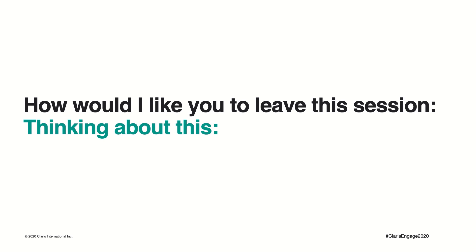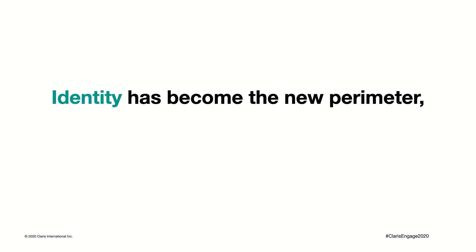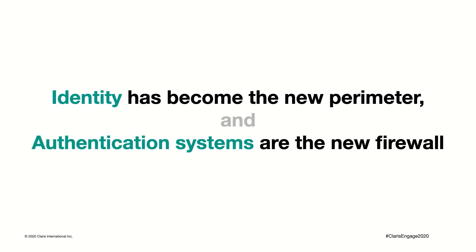To wrap things up: in a brand new world where the old traditional model of having all users in one place with perimeter defenses and a firewall protecting that perimeter no longer holds, identity has taken on a new importance and protecting that identity is crucial. Who are you? Are you who you say you are? How do we know this? Whom do we trust to verify this? This modern system of identity and access management allows us to answer these questions with a high degree of confidence. Thank you for listening — find us on the FileMaker community for any questions.